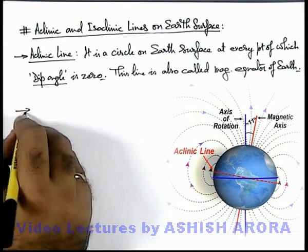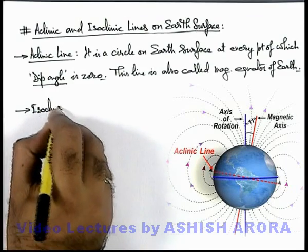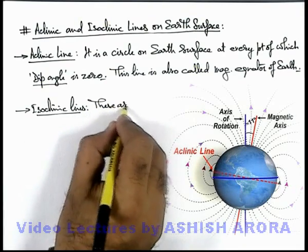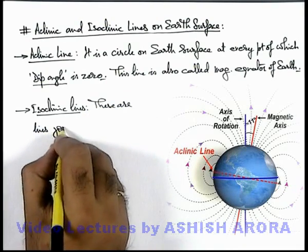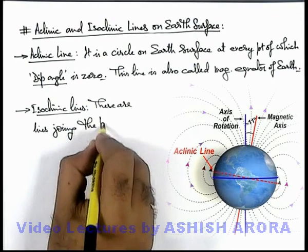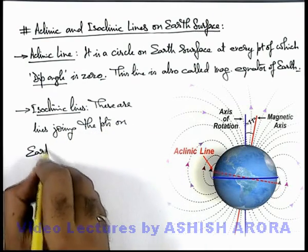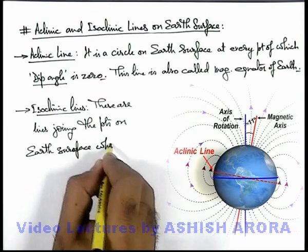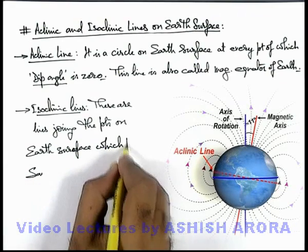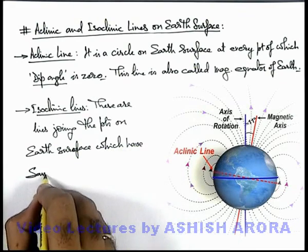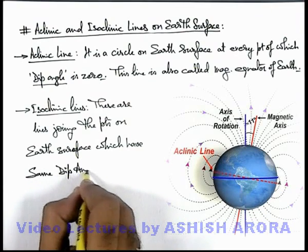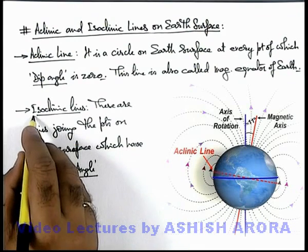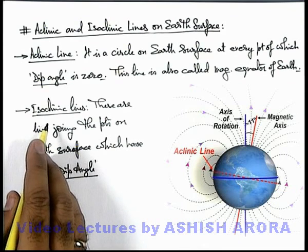Similar to this, if we define isoclinic lines, these are lines joining the points on earth's surface which have the same dip angle. If we join all points on earth's surface where the dip angle is the same, the lines drawn are called isoclinic lines. For every dip angle there will be a separate isoclinic line.